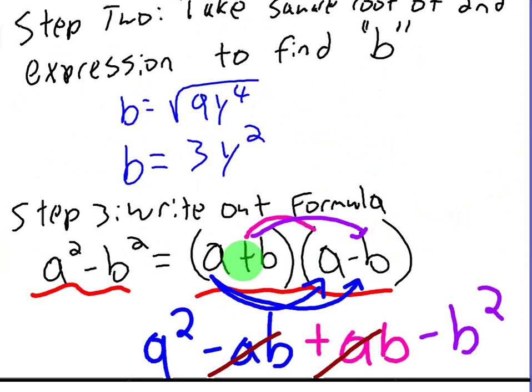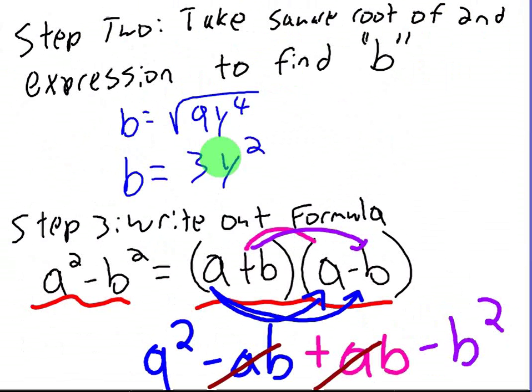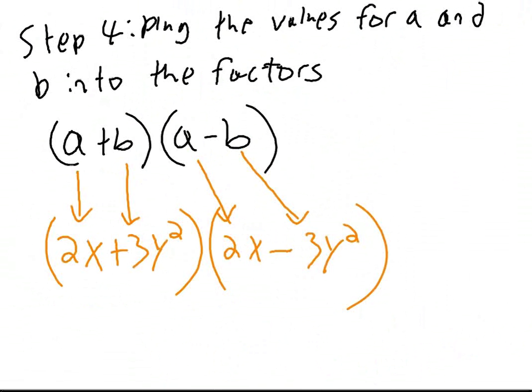What would happen if you multiplied these parentheses? You get a squared for your first, then you'd get minus ab for your second. Then you'd get plus ab for your I in FOIL. Then you'd get minus b squared for your fourth. And notice what happens there. Those two terms in the middle cancel. And you end up with a squared minus b squared, which is exactly what you started with.